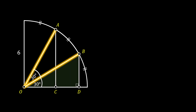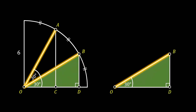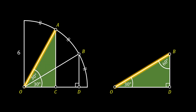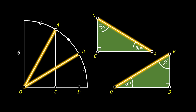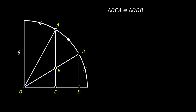Now we can try and isolate triangle ODB. You can see that it is a right triangle with an angle of 30 degrees, which means the angle at point B must be 60 degrees. Now let's look at the other right triangle, OCA. The angle at point O of this triangle consists of two angles of 30 degrees, which means this angle must be 60 degrees. We can conclude that the angle at point A must be 30 degrees. Since both triangles have two identical angles of 30 and 60 degrees and they also share the same hypotenuse with the value of 6, we can use the angle-side-angle theorem to conclude that triangles OCA and ODB must be congruent.